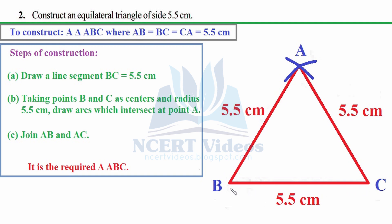Steps of construction: First, pick your ruler, measure 5.5 cm, draw a line segment, and name it BC. Second, adjust your compasses to 5.5 cm, put the needle on one end, and draw an arc. Without changing the radius — since all sides are equal in an equilateral triangle — put the needle on the other end and draw an arc. Where they intersect is point A. Connect all three points to get your equilateral triangle with sides of 5.5 cm.